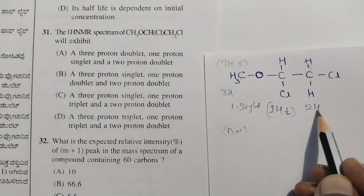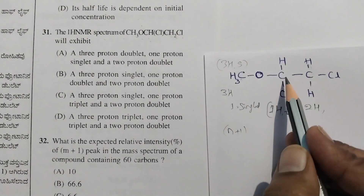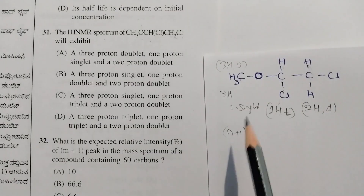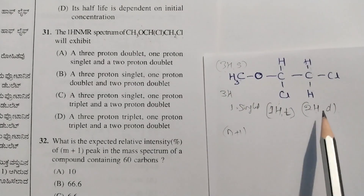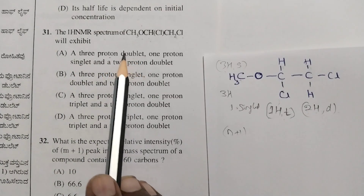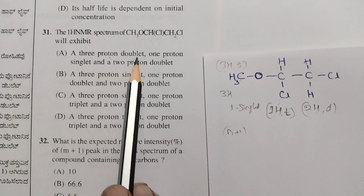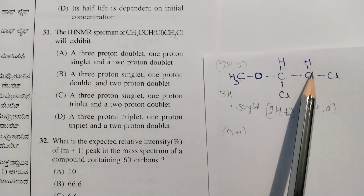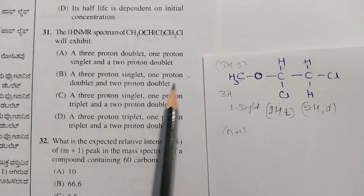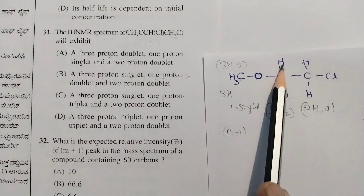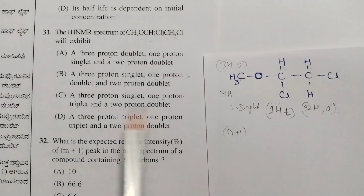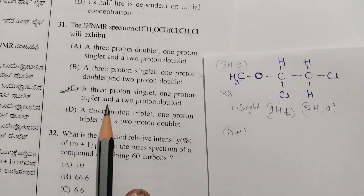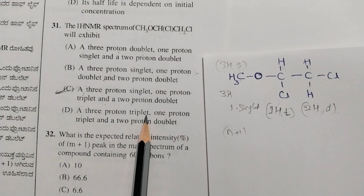These two hydrogens on CH₂Cl are equivalent — two H — and the adjacent carbon has one hydrogen, so 1+1 = 2, which is a doublet. So the peaks are: three-H singlet, one-H triplet, two-H doublet. Checking the options: option C — three-proton singlet, one-proton triplet, two-proton doublet — is correct.